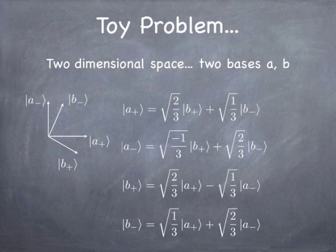The notion is that we have two different Hamiltonians. We have the original Hamiltonian, which we solve, and we discover that the eigenvectors and eigenvalues of that Hamiltonian are most simply expressed in the A basis — A-plus and A-minus could be eigenvectors of the original Hamiltonian. Then there's a perturbation to that Hamiltonian with a different set of eigenvectors, most simply expressed in the B basis — B-plus and B-minus could be eigenvectors of this perturbation.